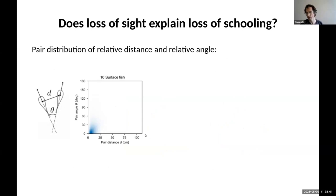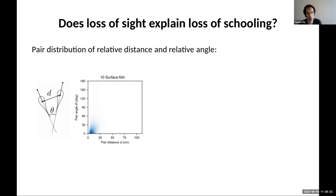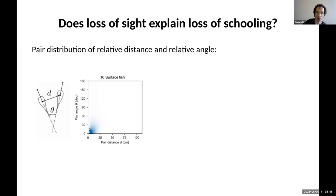If you're on the right of the diagram, the fish are far from each other — all the way to the right means they're on opposite sides of the tank. On the left of the diagram, they're very close. At the bottom, they're aligned, swimming in the same direction; at the top, they're swimming in opposite directions. For ten surface fish, we see something reflective of schooling: the color clusters in the bottom-left, showing short distances and small angles — they like swimming close together and in the same direction. That dark spot in the bottom left is schooling.